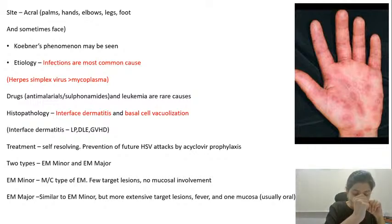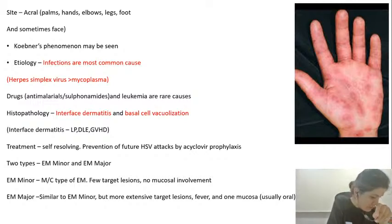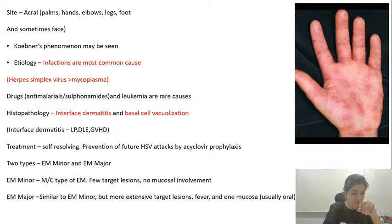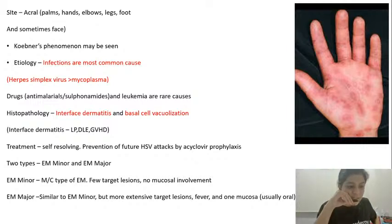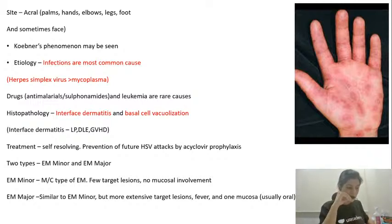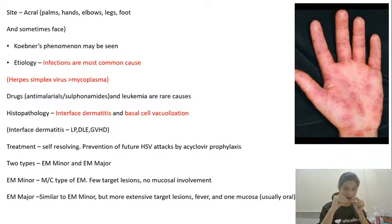In which condition do you see reverse Koebner phenomenon? Psoriasis is intriguing in which you see true Koebner phenomenon as well as reverse Koebner phenomenon. What is reverse Koebner phenomenon? It says that if you traumatize a lesion of psoriasis, then it will disappear from that site. Reverse Koebner phenomenon is seen in cases of psoriasis.